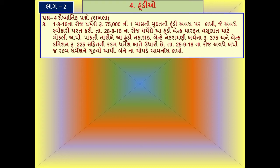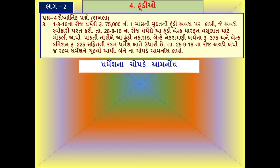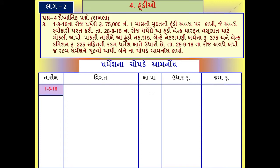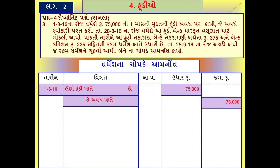જે અવધે સ્વીકારી, પરત કરી. બંનેના ચોપડે આમ્નોંધ લખો. સૌ પ્રથમ આપણે ધરમેશના ચોપડે આમ્નોંધ તૈયાર કરીએ. તારીખ એક આઠ સોળના રોજ ધરમેશે ₹૭૫,૦૦૦ ની હૂંડી અવધ પર લખેલ છે. જે અવધ સ્વીકારે ત્યારે ધરમેશ માટે આ લેણી હૂંડી બને છે - લેણી હૂંડી ખાતે ઉધાર થાય અને અવધ ખાતે જમા.